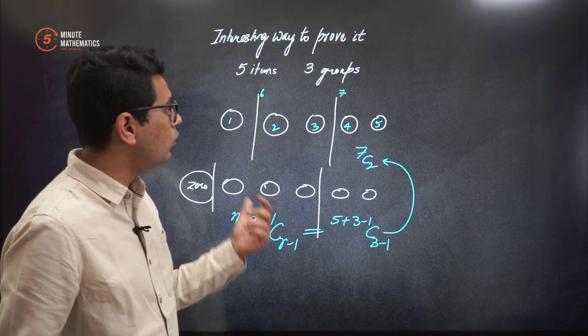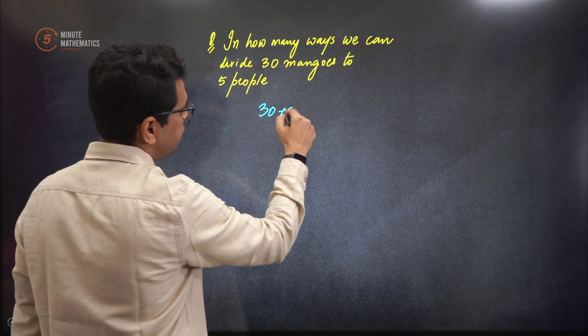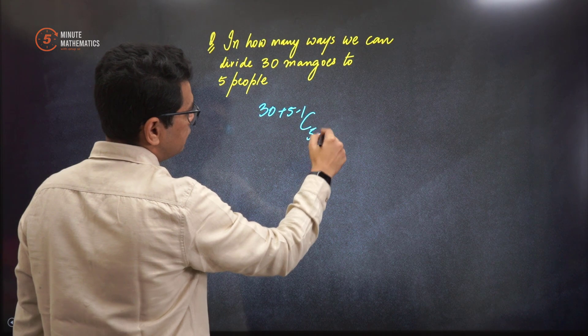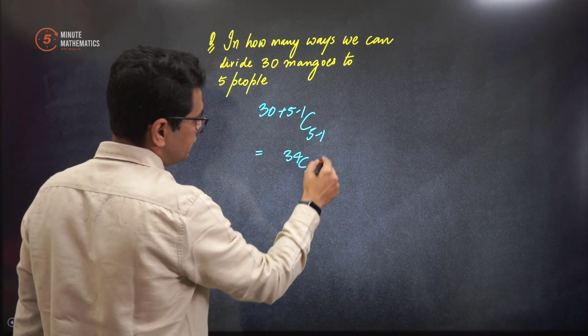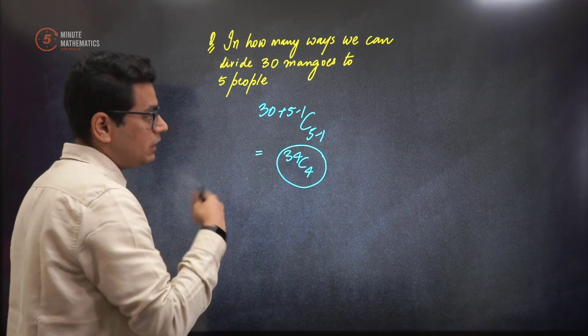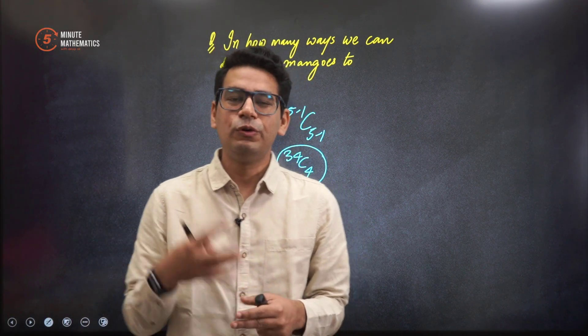And now if we want to go back and solve this problem, now you know the easy peasy way out: 30 plus 5 minus 1, C, 5 minus 1. So the answer to this particular problem is 34C4. That is, these how many cases will be possible when we want to give 30 mangoes to 5 people.